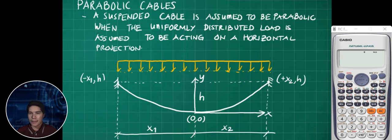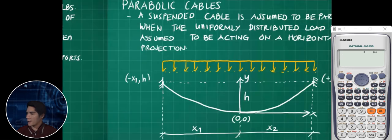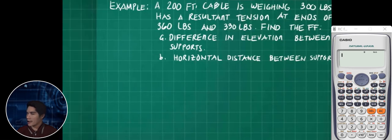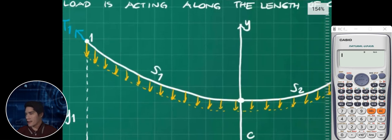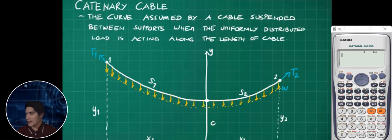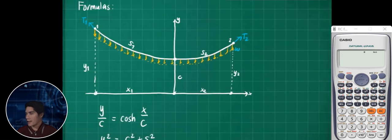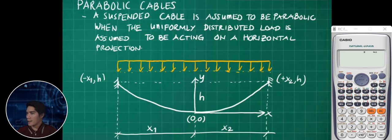That's the difference between the catenary cable. For catenary cable, the uniform load is acting on the cable length itself, along the length of the cable. That's the difference between the catenary cable and the parabolic cable.